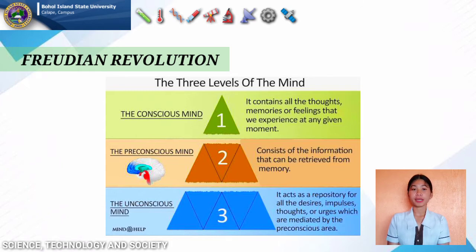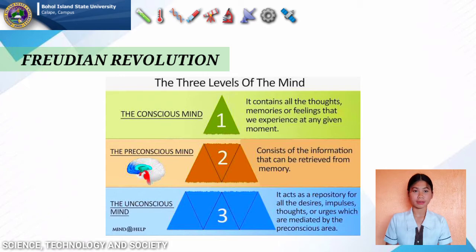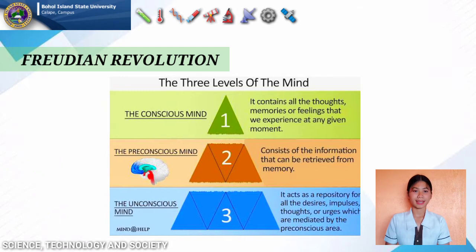The pre-conscious mind consists of experiences that we are not aware of, but can be made conscious by focusing on them. The unconscious mind is the highest level of mind and contains repressed urges, thoughts, memories, and wishes that are disturbing and threatening. Thoughts within the unconscious mind are unorganized, based solely on pleasures and desires, and are usually in conflict with society.